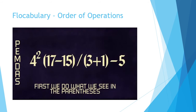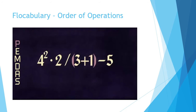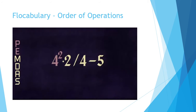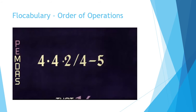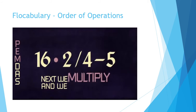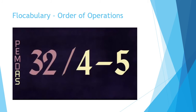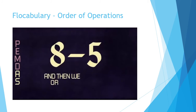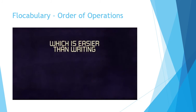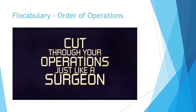First we do what we see in the parentheses: seventeen minus fifteen — that is two. Three plus one — that is four. Now exponents is what we'll be dealing with. Four to the second means four times four; that equals sixteen. Next we multiply and we divide: sixteen times two is thirty-two. Thirty-two divided by four is eight. And then we add or subtract: eight minus five is three.